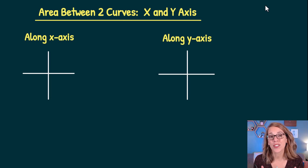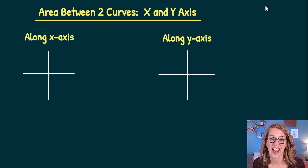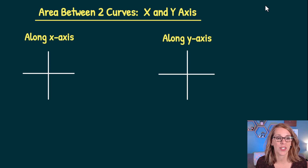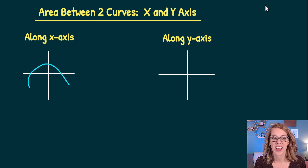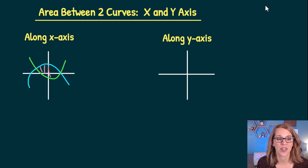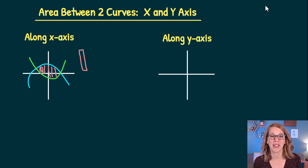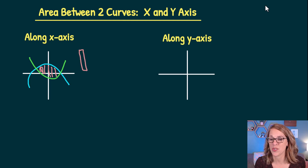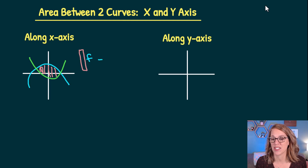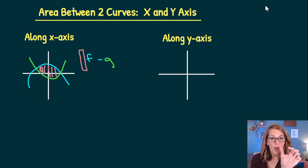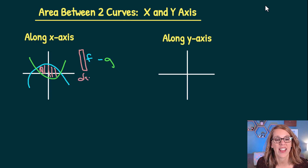To find the area between two curves, the very first thing you want to do is decide if you're going to integrate along the x-axis or along the y-axis. Let's say you had two parabolas — the blue one opens down and the green one opens up. This gives us an area in between the two curves. I'm drawing infinitely many rectangles that have a height, which is the distance between my two curves — that's the upper curve minus the lower curve — and the width is in the x direction.